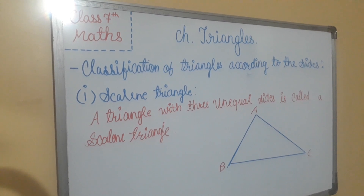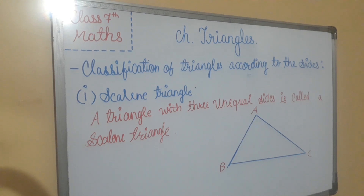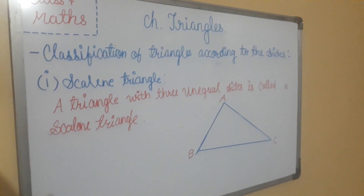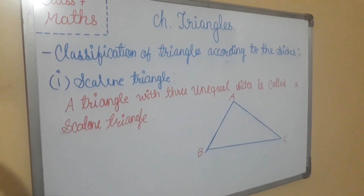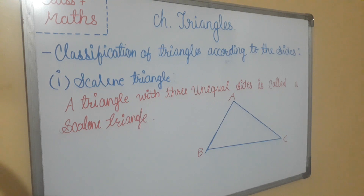Now, classifications of triangles according to sides are of three types. First is the scalene triangle. A triangle with three unequal sides is called a scalene triangle. In triangle ABC, all sides are not equal — every side is different: AB is not equal to BC, and BC is not equal to AC.